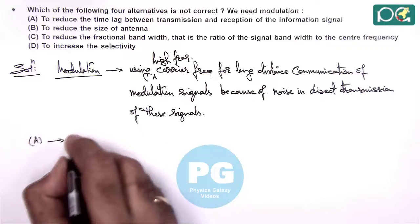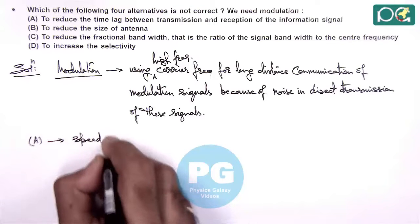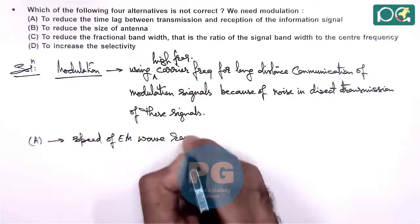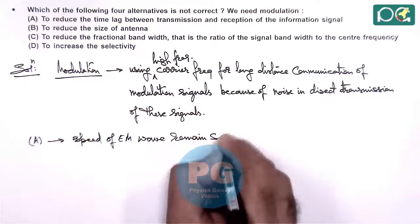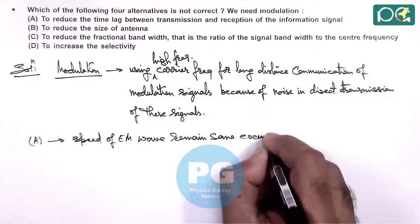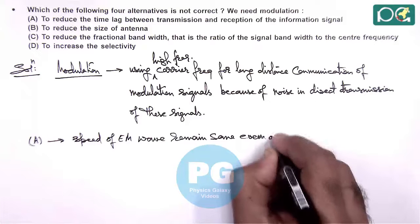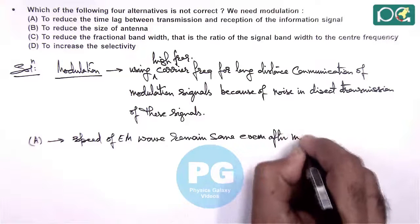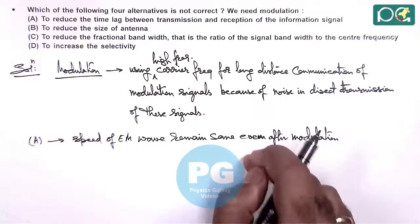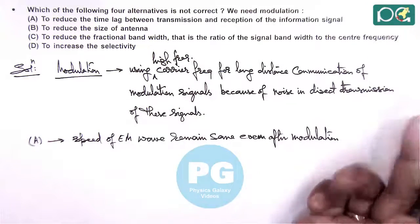In option A we can write speed of electromagnetic wave remains same even after modulation. So the time lag between transmission and reception remains same.